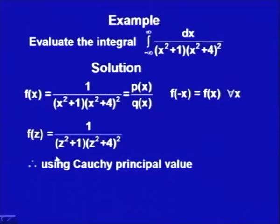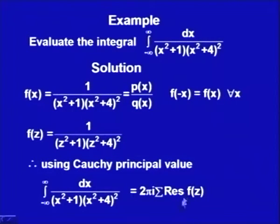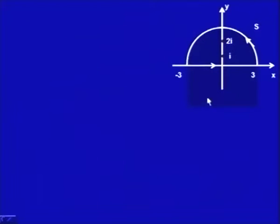The denominator has zeros at ±i and ±2i, where ±i are simple zeros, while ±2i are zeros of second order. We will use the Cauchy principal value. The formula is: the integral from −∞ to +∞ of dx/[(x²+1)(x²+4)²] equals 2πi times the sum of residues of f(z) over all poles in the upper half-plane — that is, at z = i and z = 2i.